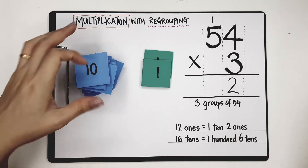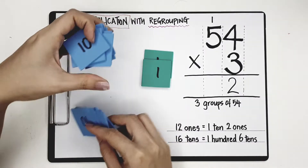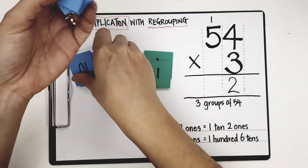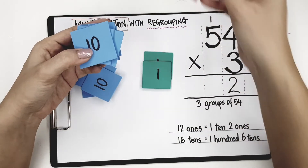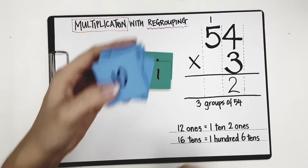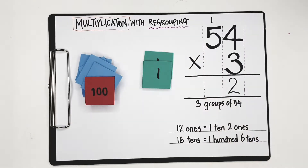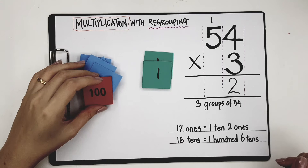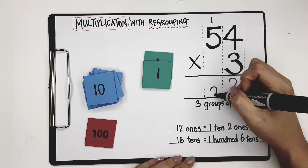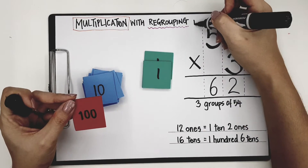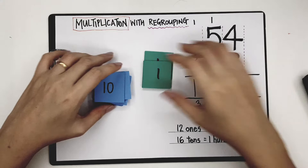Now, 16 tens is the same as 100 and 6 tens. If I have 10 tens, I can regroup 10 tens to become 100 — 10 tens is the same as 100. Instead of calling it 10 tens, I'm going to call it 100. So I have 6 tens left, and I put that here. This 100 goes in the 100's place.